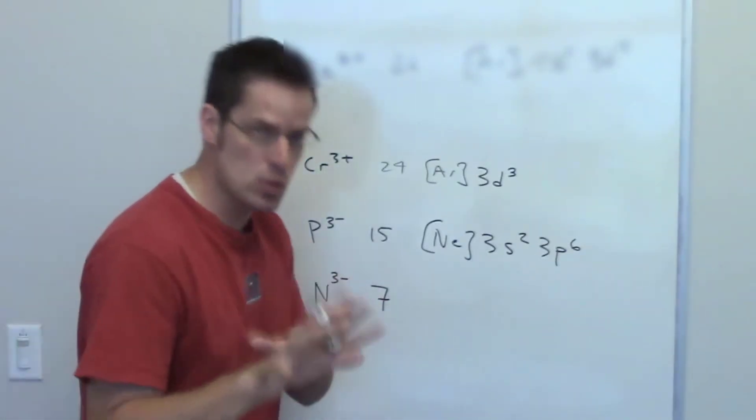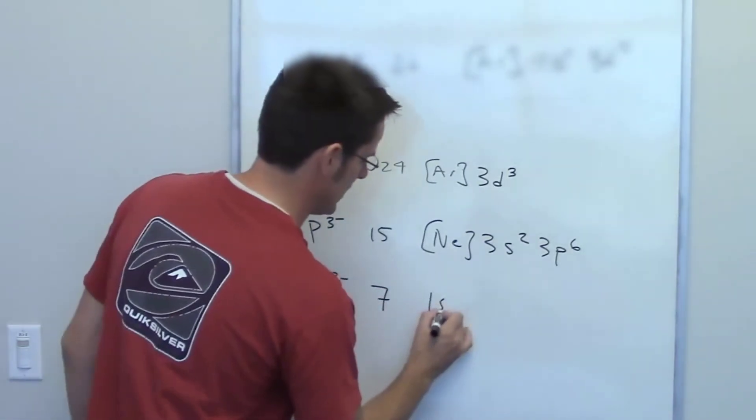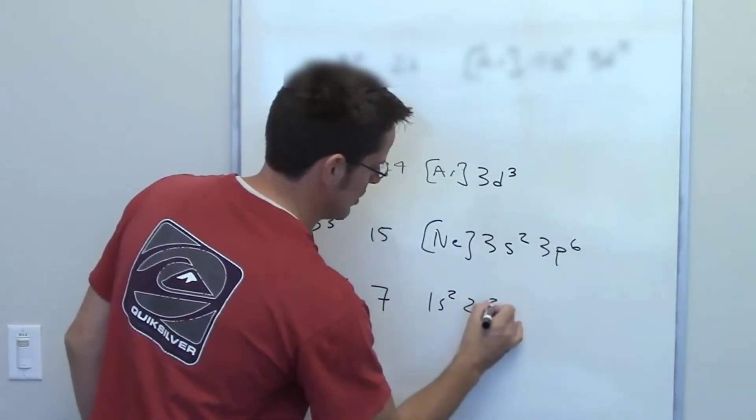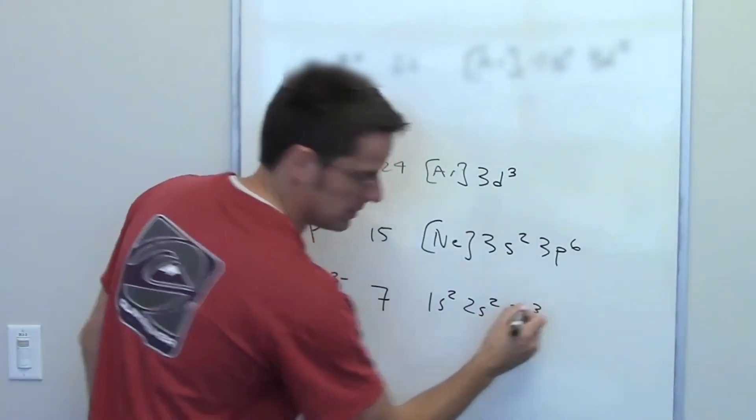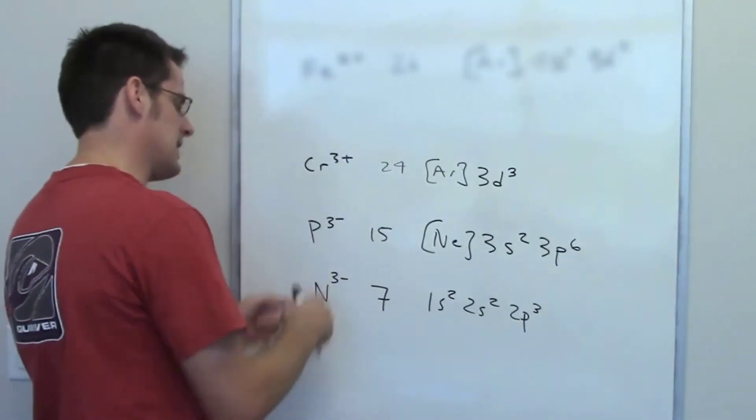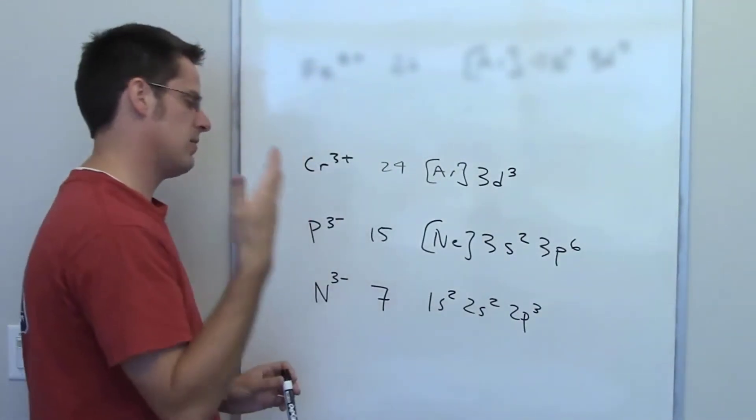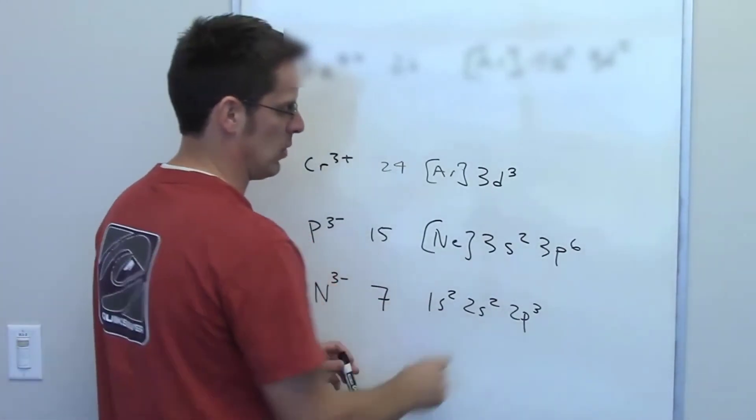So nitrogen has a neutral electron configuration of 1s2, 2s2, 2p3 I believe. When it gets three new electrons added to it, the first place those are going to go are in this p orbital.